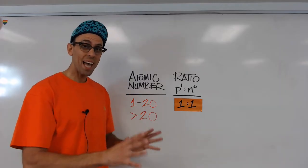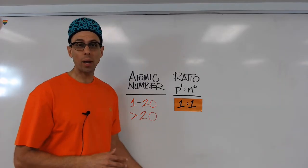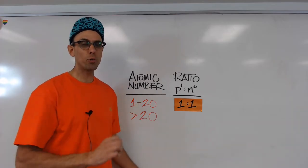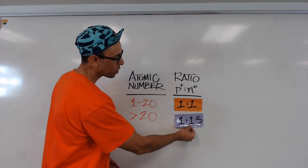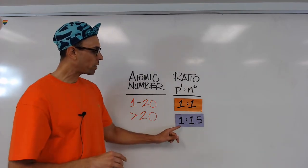But if the atom in question has an atomic number that's greater than 20, we need extra neutrons to keep that nucleus together. And mathematically the ratio ends up being about 1 to 1.5.